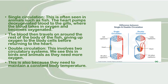Double circulation involves two circulatory systems, and we see this in birds and mammals, as they need more oxygen — also because they need to maintain a constant body temperature. Organisms with double circulation are usually not surrounded by water, which means it takes a lot more energy for their cells, requiring more oxygen and food. This is why land animals have a double circulatory system.